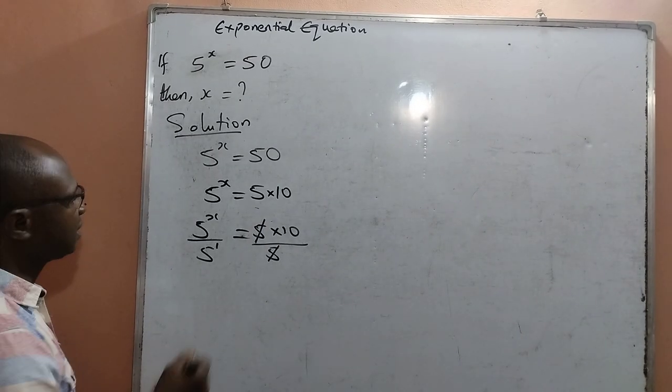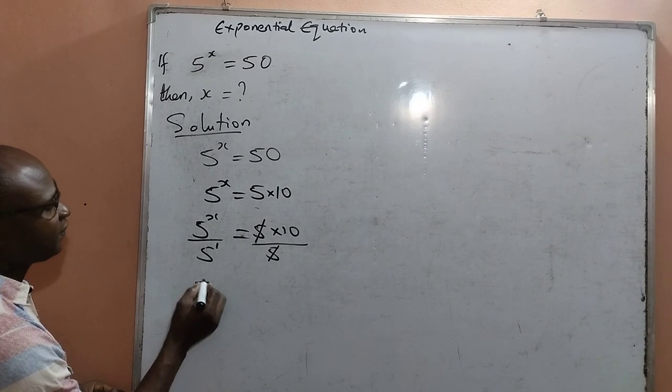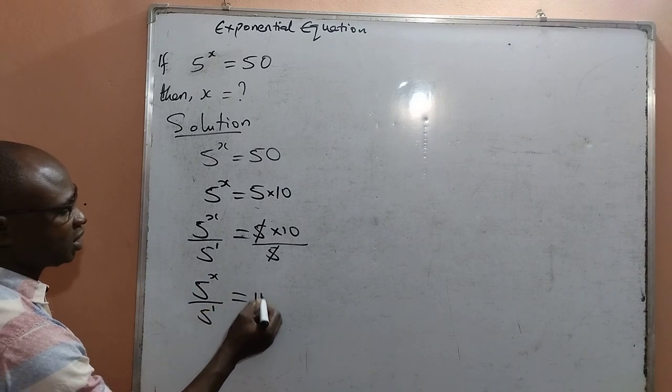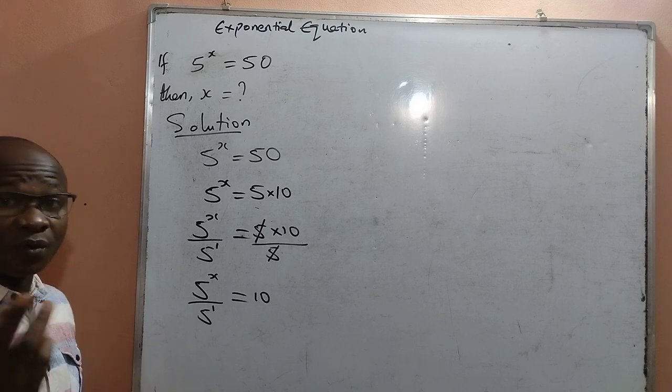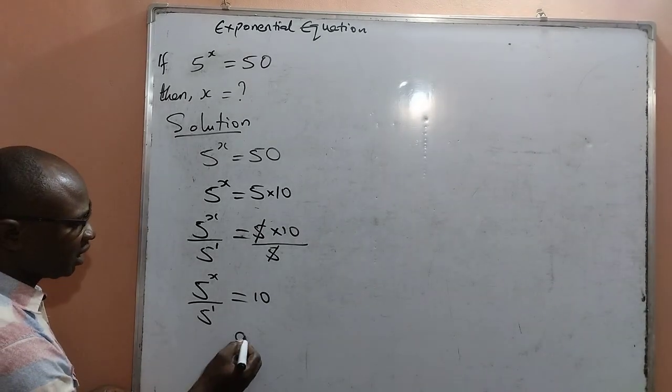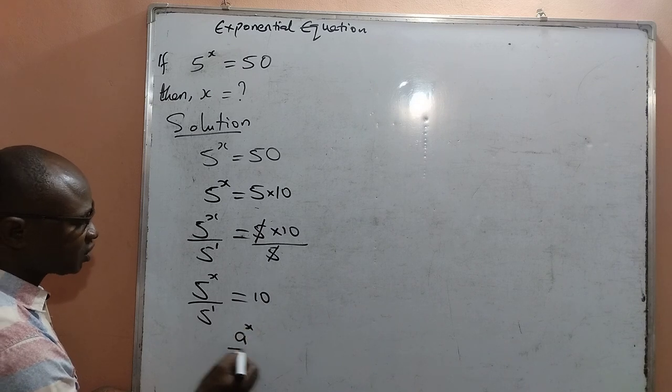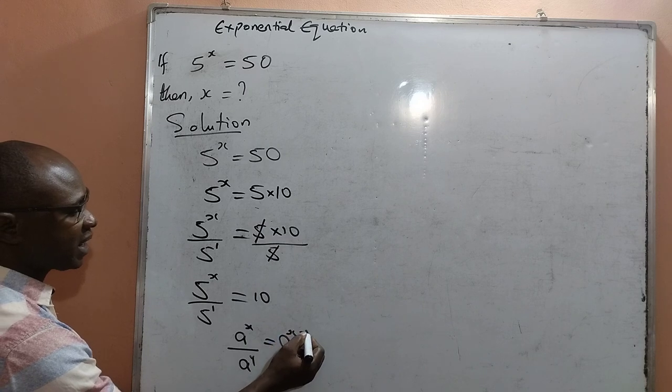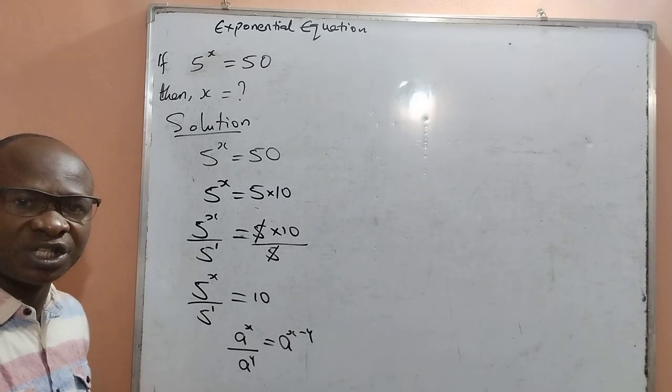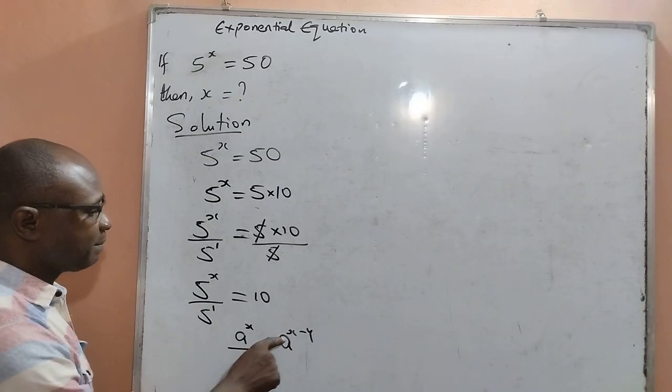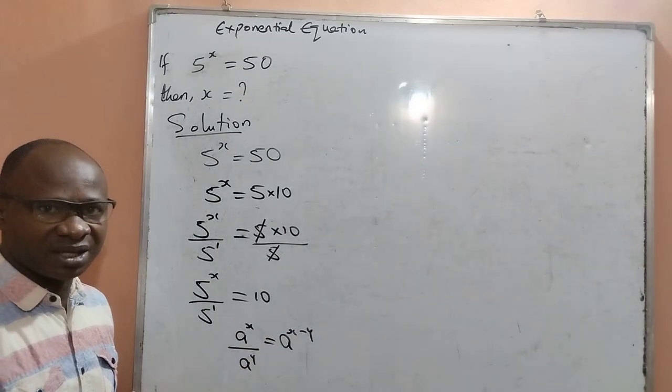Therefore, by this I will have 5 raised to the power x all over 5 raised to the power 1 is equal to 10. And there is a law in indices that says a raised to the power x all over a raised to the power y is equal to a raised to the power x minus y. What it means is that when the bases are the same and they are divided, the powers should be subtracted.